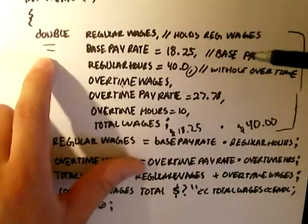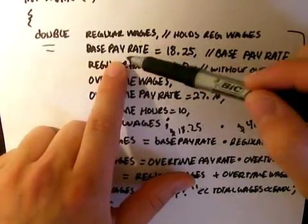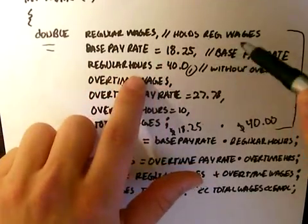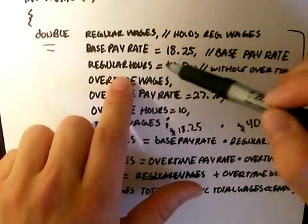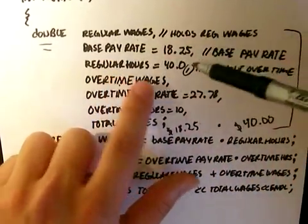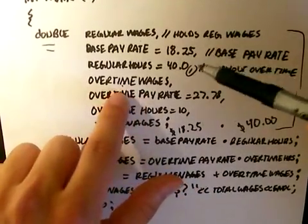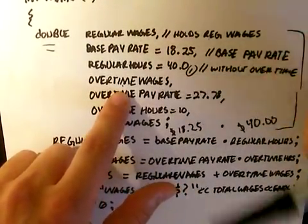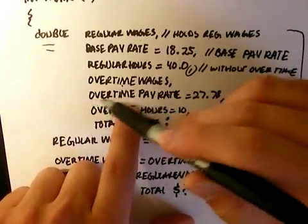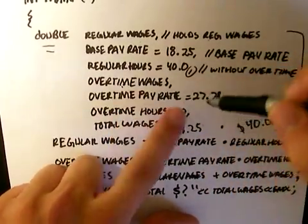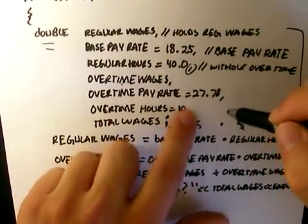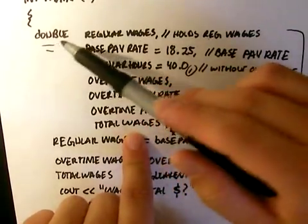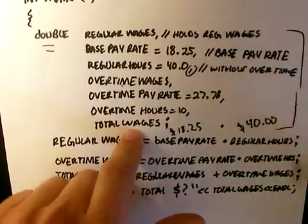This holds my regular wages. Here I am a base pay rate. I am defining the variable, I am setting it equal to $18.25. That is my base pay rate. Here my regular hours is a variable again, setting it as a double variable. I am setting it equal to 40. Of course, that is without overtime. And this is my overtime wages. I am just defining it as a variable, an empty variable, allocating data so I can put some in it. Here I am defining overtime pay rate. I am setting it equal to $27.78. Here my variable overtime hours is equal to 10. Here I am defining total wages as a variable. The data type is double, again.